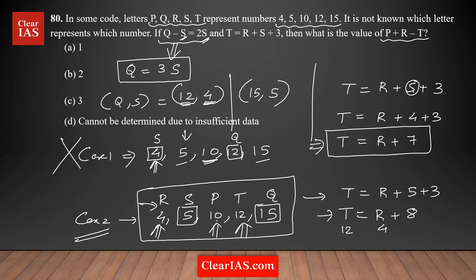What is the question? You need to find out the value of P plus R minus T. So value of P is 10 plus value of R which is 4 minus value of T which is 12. 10 plus 4 is 14, 14 minus 12 is 2 is the right answer. So option B is actually the right answer for your question.